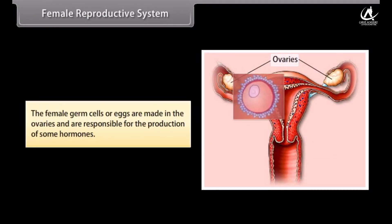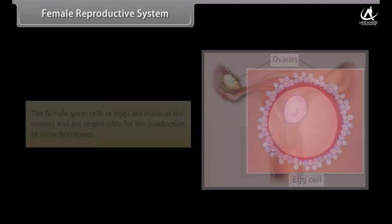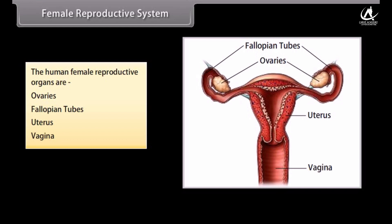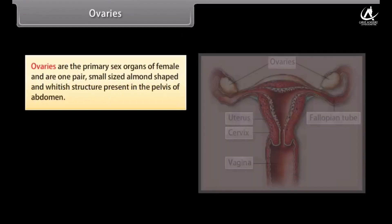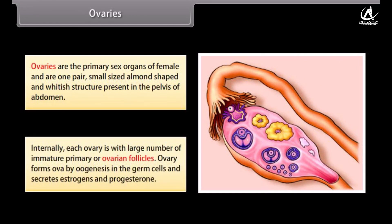The female germ cells or eggs are made in the ovaries, which are also responsible for the production of some hormones. The human female reproductive organs are: ovaries, fallopian tubes, uterus, and vagina. Ovaries are the primary sex organs of the female — one pair of small, almond-shaped, whitish structures present in the pelvis. Internally, each ovary contains a large number of immature primary ovarian follicles. The ovary forms ova by oogenesis and secretes estrogens and progesterone.